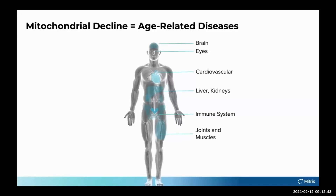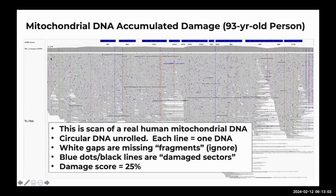You might be predisposed toward cardiovascular disease, Alzheimer's, diabetes, or arthritis, but the mitochondrial energy decline is what triggers those conditions.